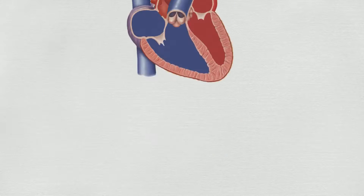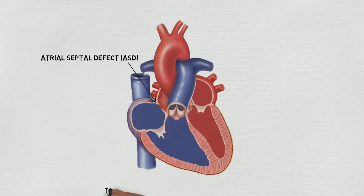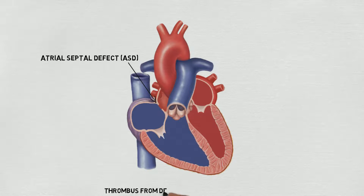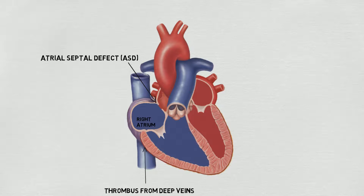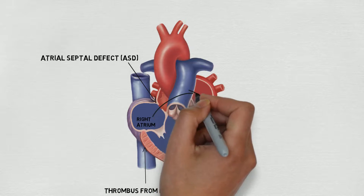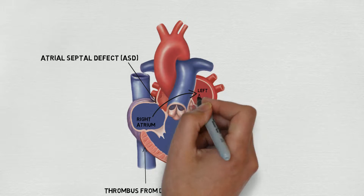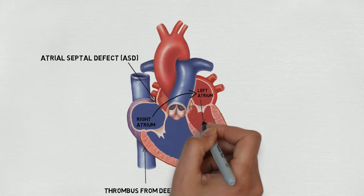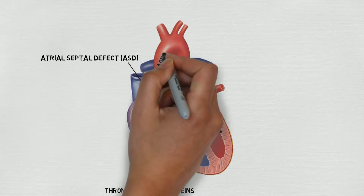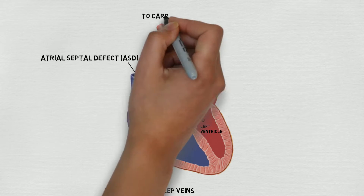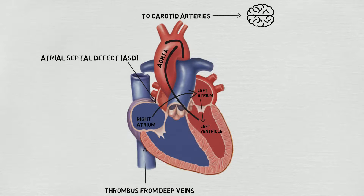Patients who have ASDs — atrial septal defects — the DVT comes up into the right atrium, and instead of going into the right ventricle, it crosses over into the left atrium. Once it crosses into the left atrium, it goes into the left ventricle, then the aorta, then the carotid arteries, causing a stroke.